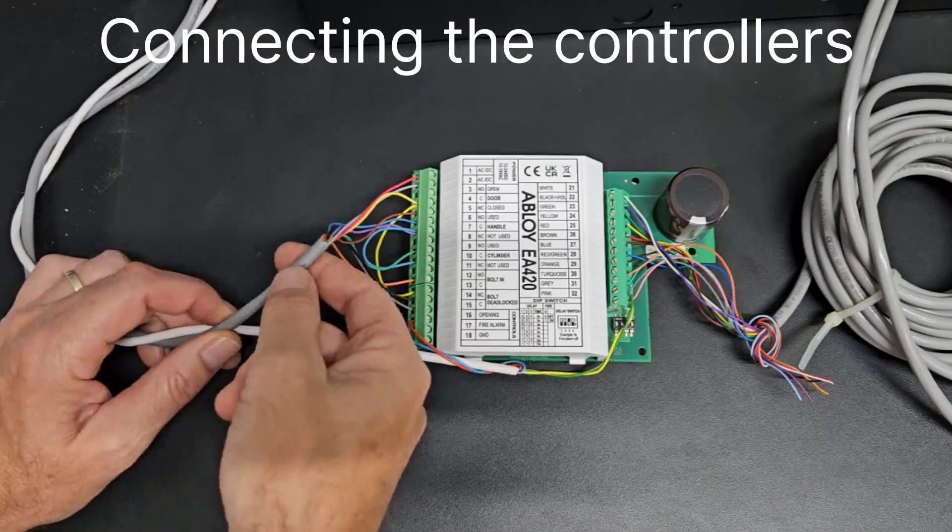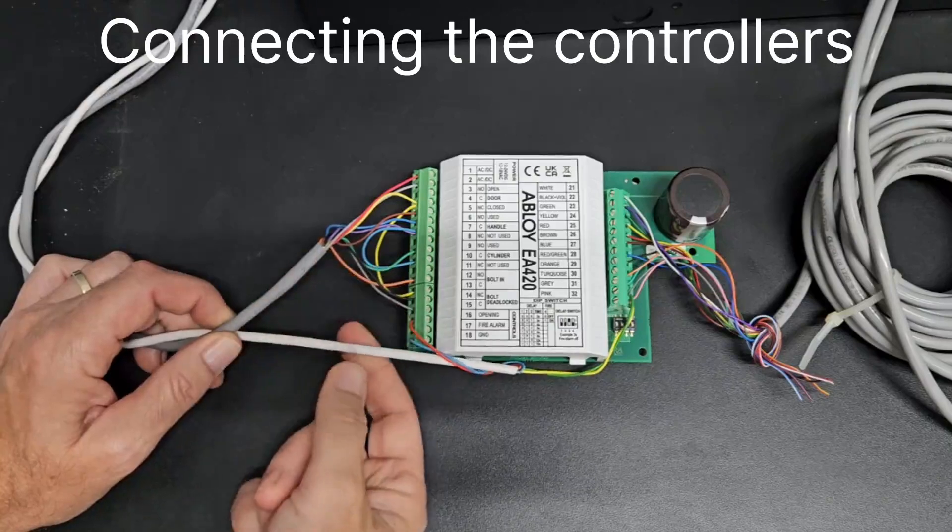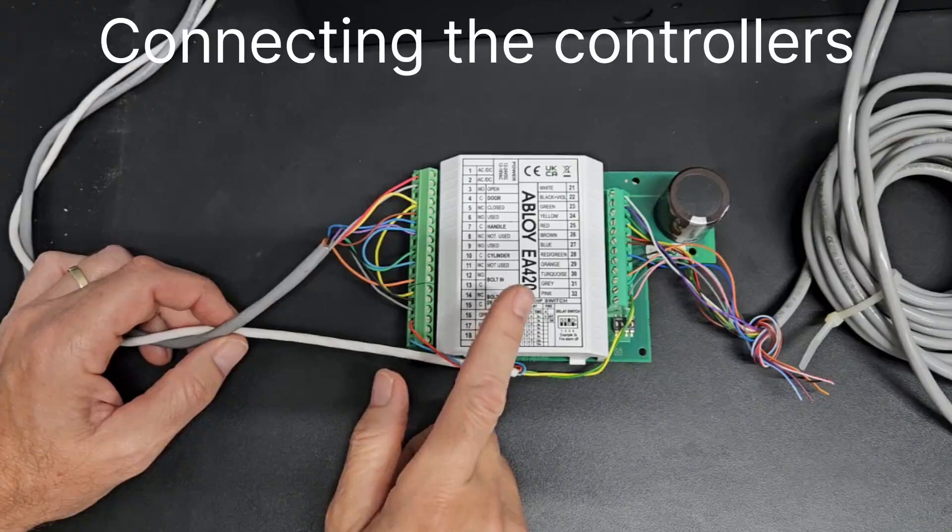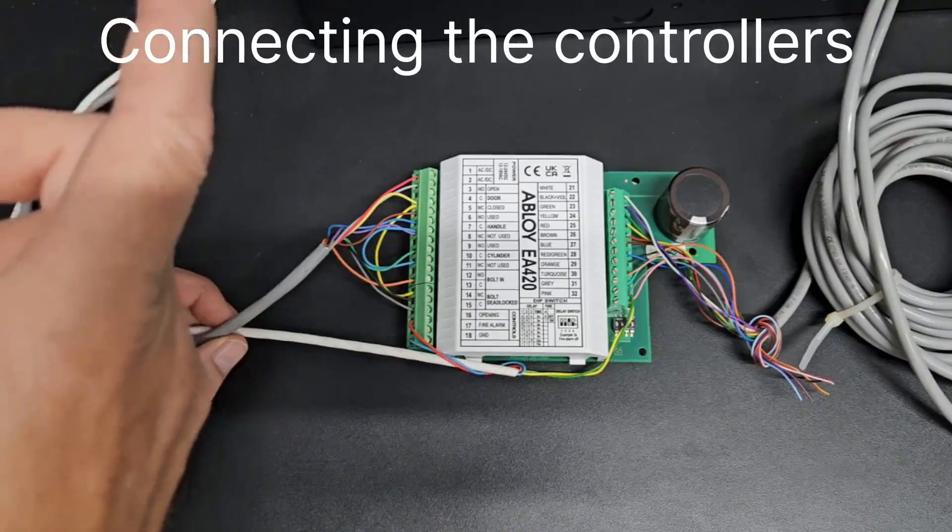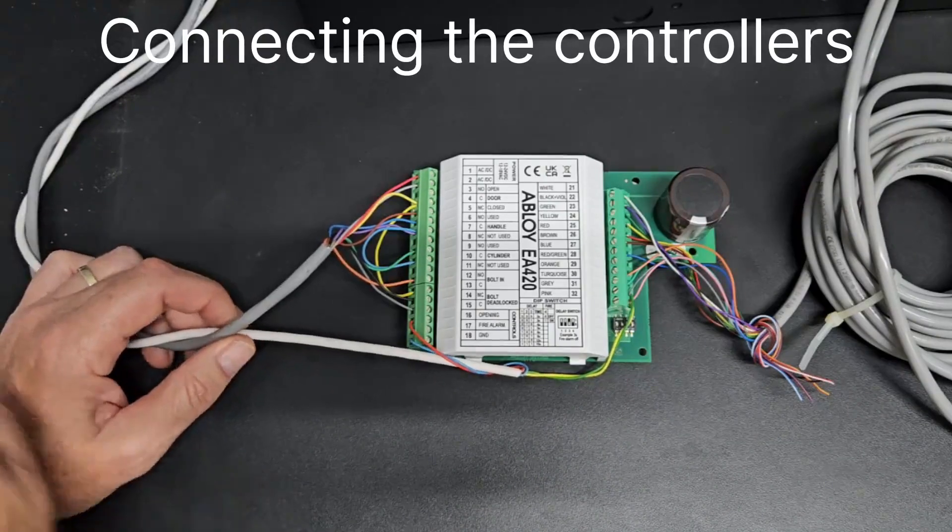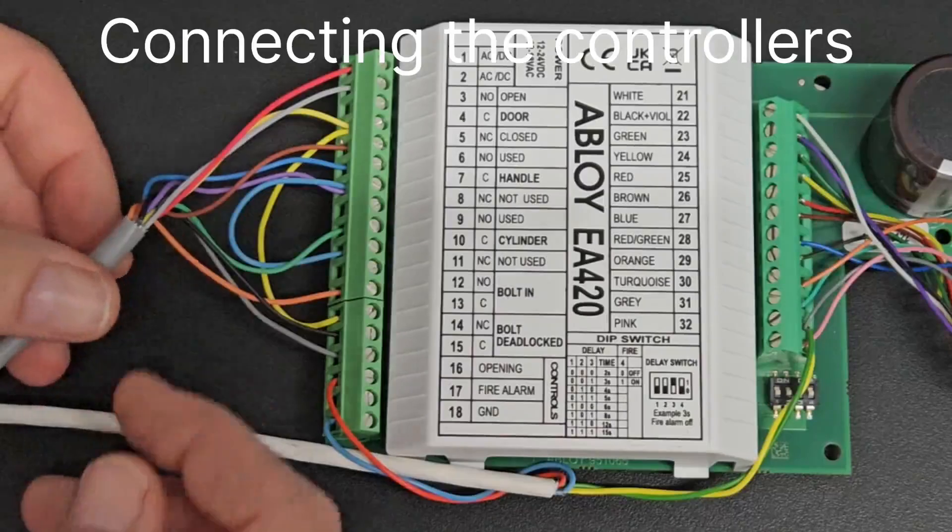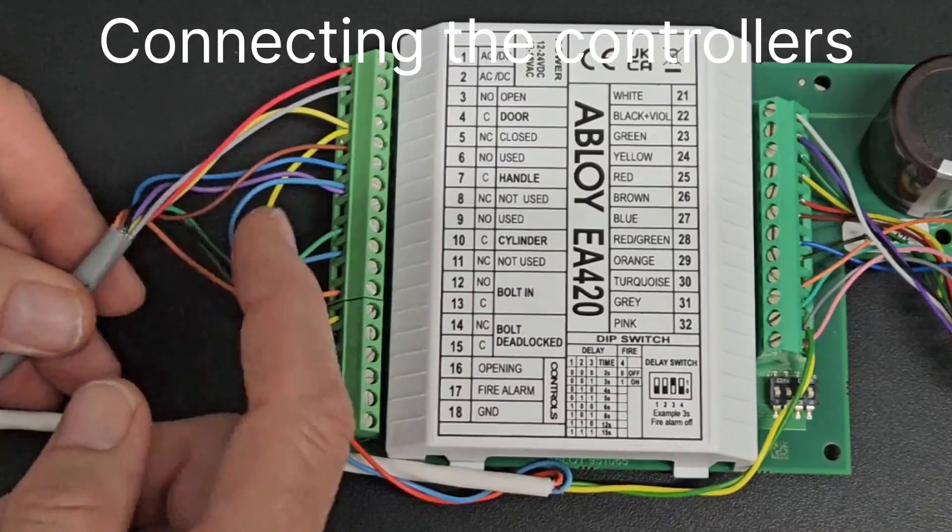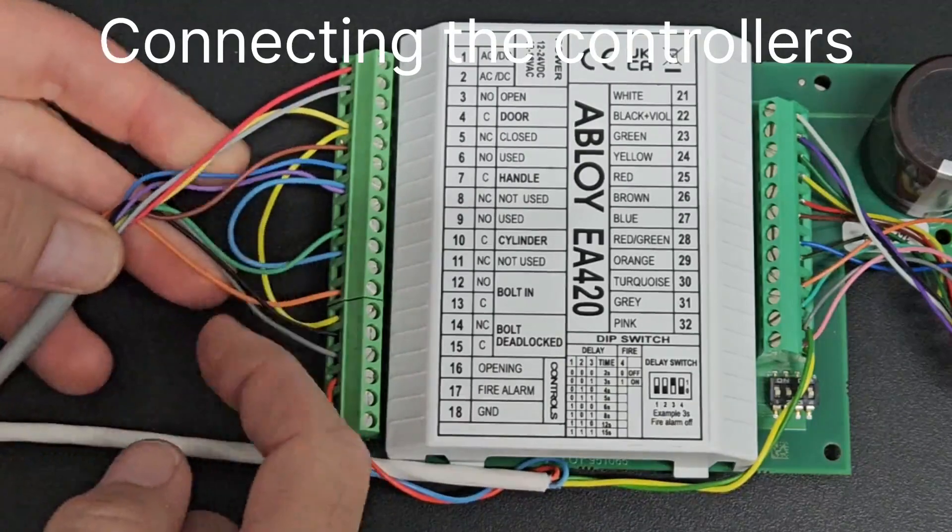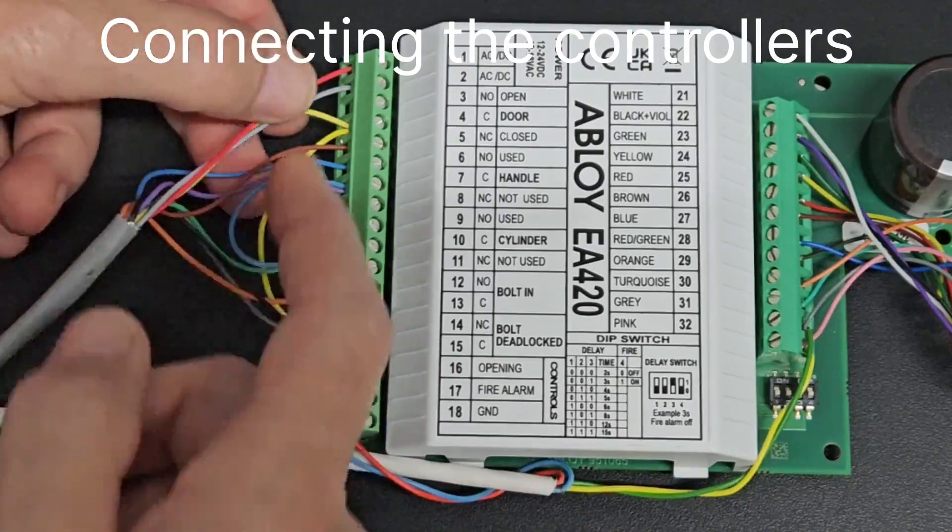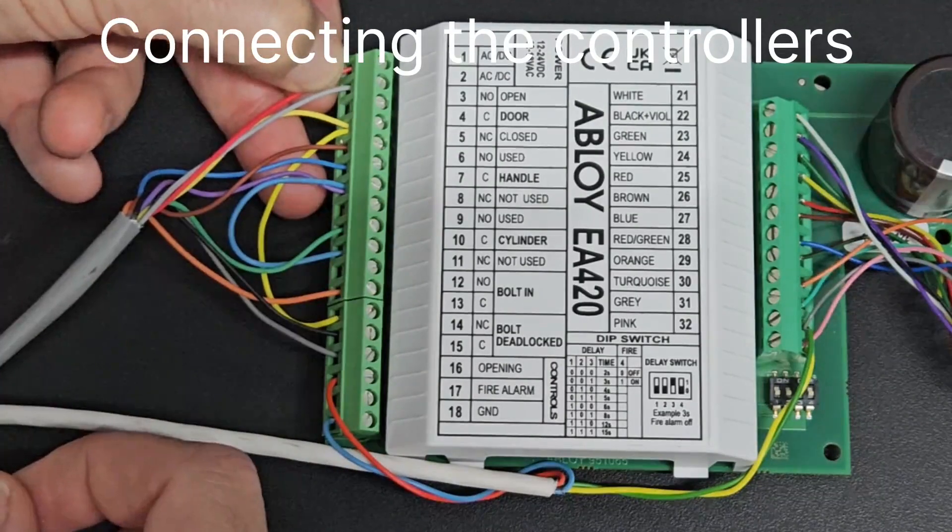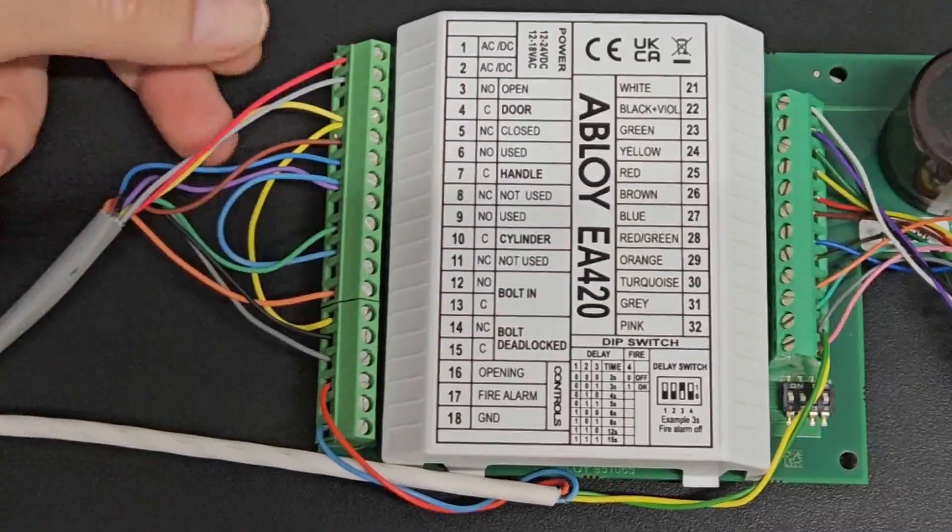You'll need to cut a length of 10-core data cable and 4-core data cable long enough to reach from the EA420 to the RTRT2EL. Leave an extra 60 or so centimeters. Strip back the outer sheath on both the 10-core and the 4-core cables to reveal 7 or so centimeters of the colored wires. And strip the ends of the colored wires back so that 5mm of copper is exposed.